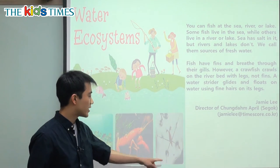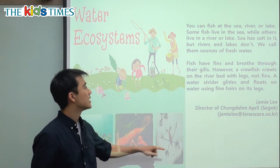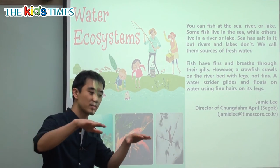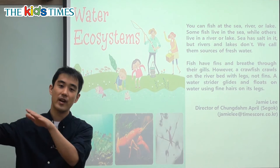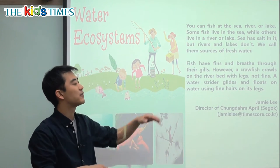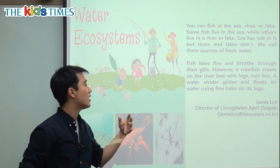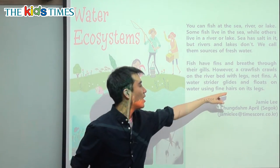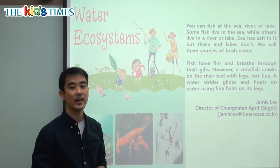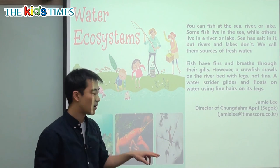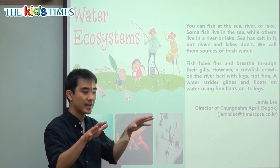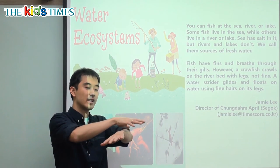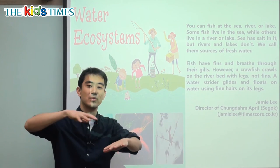A water strider — this bug here — glides and floats on the water. Glides means it goes very smoothly, like an ice skater. And it floats on the water using fine hairs on its legs. There are little hairs on the legs and it helps it float on the water, gliding very smoothly.